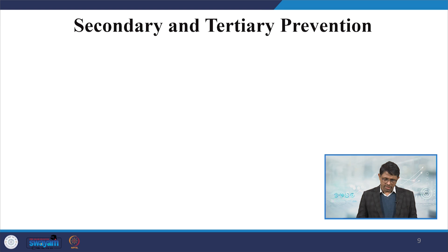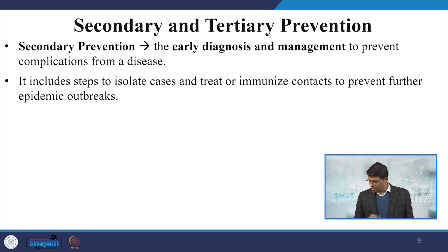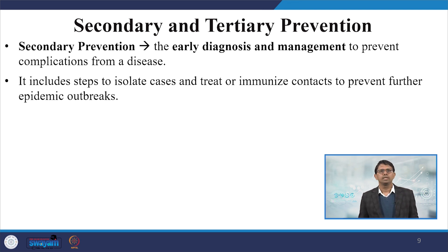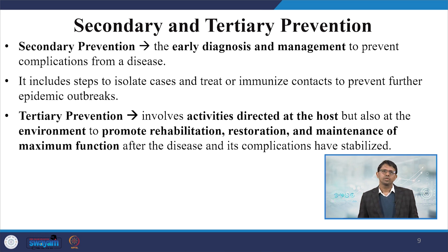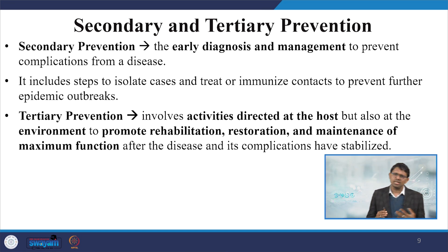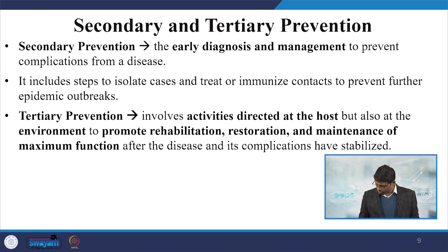Secondary prevention refers to early diagnosis and proper management to prevent complications from a disease. It includes steps to isolate cases and treat or immunize contacts to prevent further epidemic outbreaks. Tertiary prevention involves activities directed at the host and the environment to promote rehabilitation, restoration and maintenance of maximum function after the disease and its complications are stabilized. At the primary level we are preventing the disease fundamentally; at the secondary level, management of diagnosis is key; at the tertiary level, we are preventing further deterioration once the disease is contracted.